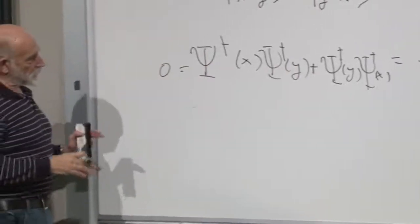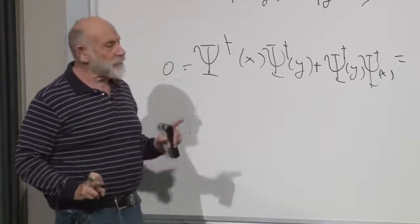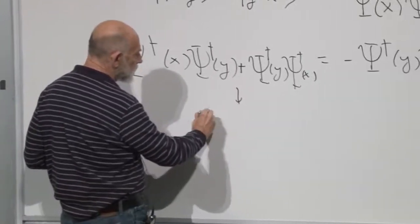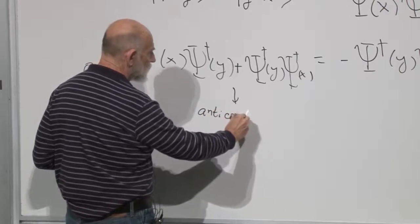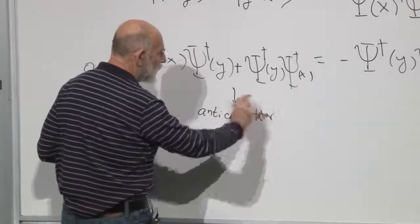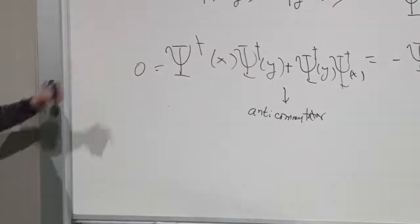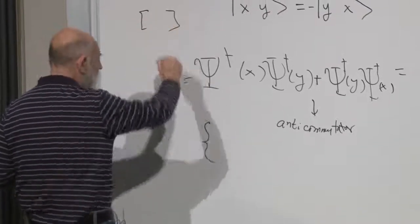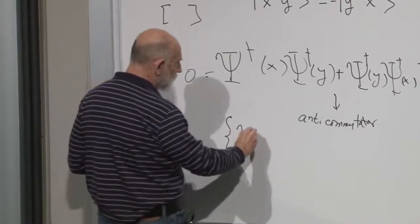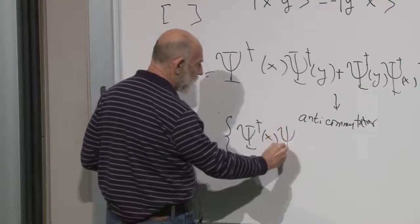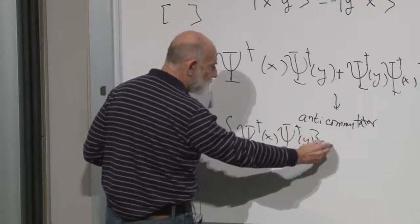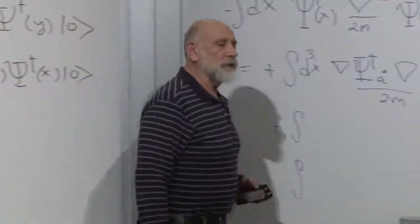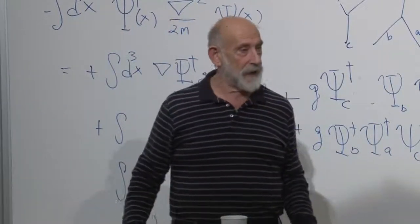This object — if you take two operators and instead of subtracting in the opposite order you add in the opposite order — that's called the anti-commutator. It's written with a curly bracket: {psi-dagger of x, psi-dagger of y} = 0. In general, when you go from bosons to fermions, you just take every commutation relation and replace it by an anti-commutation relation.